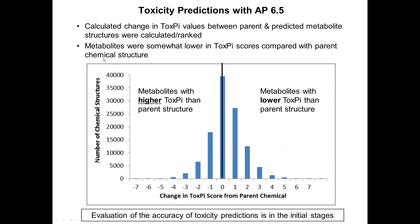Looking at the top 50 ToxPi scores, a lot were enriched in nitro groups — nitroven being the top parent chemical. We noticed nitroven's metabolites were less toxic than the parent. However, we had many examples where the parent was less toxic than its metabolites. Looking across all chemicals, there was a general propensity towards metabolites having lower ToxPi scores than the parent structure, suggesting that metabolism was a detoxification pathway overall — which is generally what we associate with metabolism first. We're evaluating the accuracy of these toxicity predictions in initial stages.